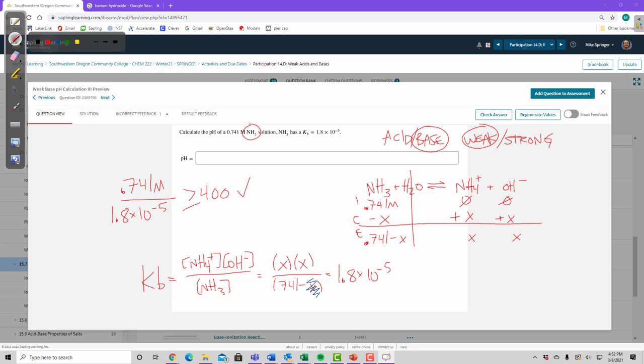So, solving this problem just got a lot easier. Now, to solve this problem, just like we did in the last one, run through the algebra and what you get to is X equals the square root of 0.741 times 1.8 times 10 to the minus 5th. 3.65 times 10 to the minus 3.